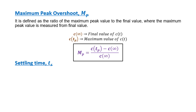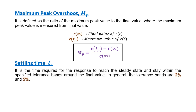The fifth parameter is settling time — symbol Ts. It is the time required for the response to reach and stay within the specified tolerance band. In general, the tolerance band used is 2% or 5%.